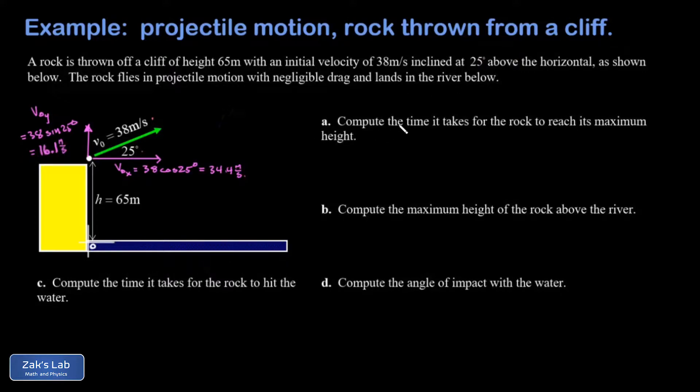Now let's look at part A. We want the time for the rock to reach its maximum height. The key physical principle about maximum height is that it's the transition between the rock moving upward and the rock moving downward. What's the transition between positive y velocity and negative y velocity? There's a special moment where the y velocity is exactly equal to zero.